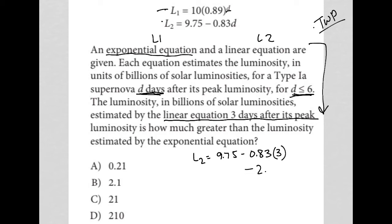This becomes 2.49 in my calculator. Then 9.75 - 2.49 in the calculator, I get 7.26. So there is the luminosity estimated by the linear equation at day three.